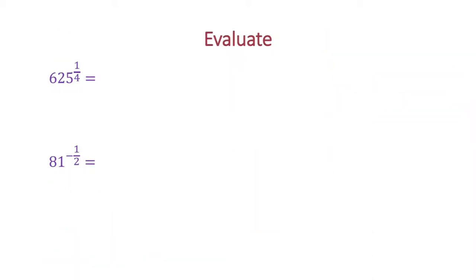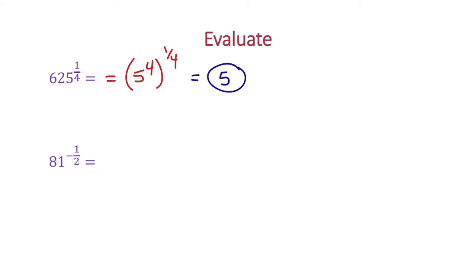Let's evaluate these — I'll show you two ways: mathematically and with a calculator. First, 625 to the 1 fourth power. You can rearrange this as 5 to the 4th power to the 1 fourth power, because 5 to the 4th is 625. Using the power rule and multiplying, this is just 5 to the 1st power, or 5.